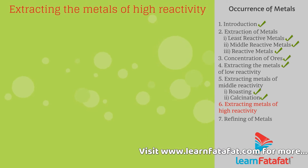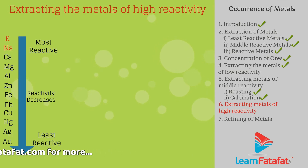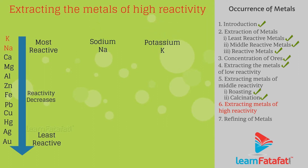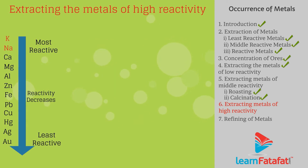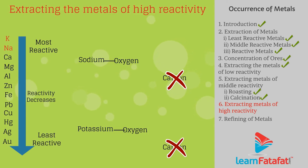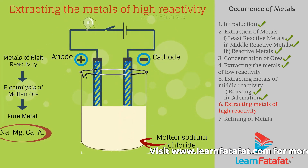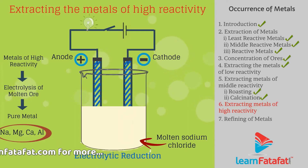Extracting the metals with high reactivity — top of the reactivity series. The metals placed at the top of the reactivity series are highly reactive, for example sodium and potassium. To obtain these metals, we cannot use reducing agents such as carbon because these metals prefer to stay bonded with oxygen. Hence, metals like sodium, magnesium, calcium, and aluminium can be obtained with the help of electrolytic reduction.